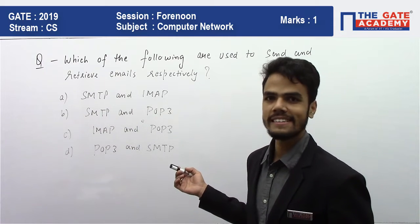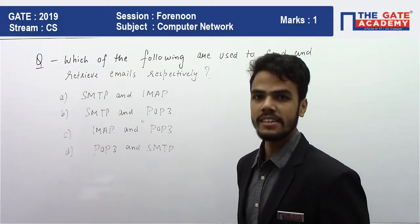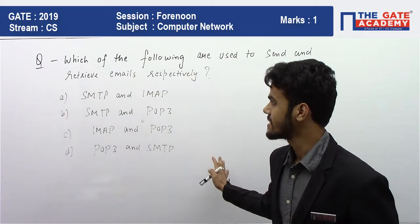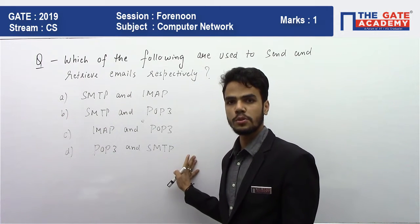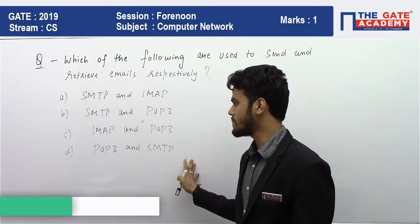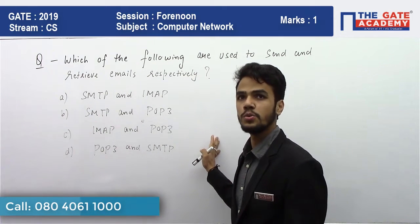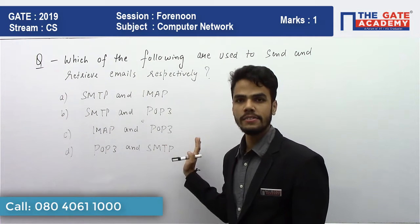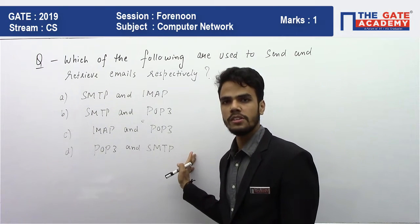The question goes like this: which of the following protocols are used to send and retrieve emails respectively? They have given us some protocols — SMTP, IMAP, and POP3 — and they are asking which one is used to send emails and which is used to retrieve emails respectively.